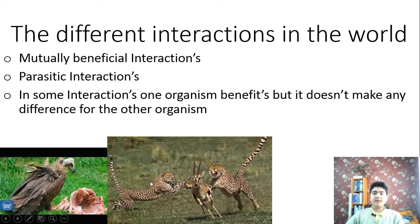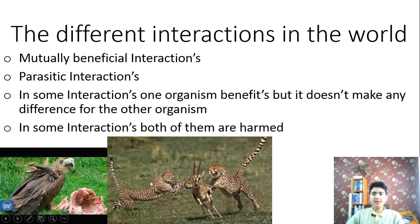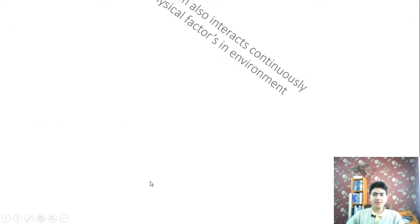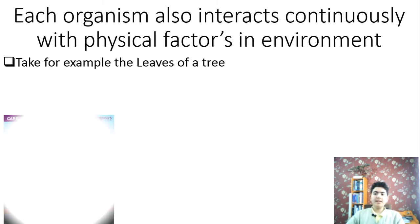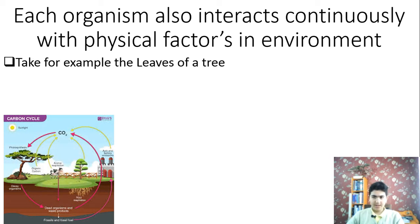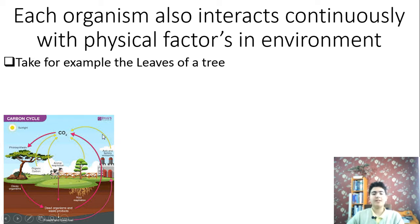Each organism also interacts continuously with physical factors in its environment. Take for example the leaves of a tree — they absorb light from the sun, take in carbon dioxide from the air, and release oxygen back to the air in a process called photosynthesis, which we will learn about in the next lectures.